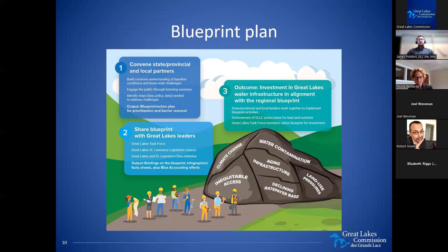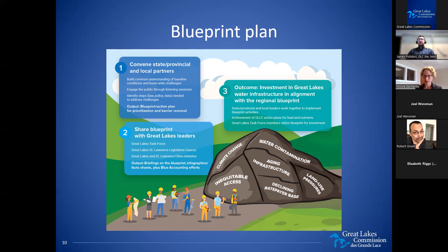The last bit for me is this graphic we had prepared to explain what we're trying to do with this project. For a while it seemed like it was infrastructure week every week in Washington D.C., and then finally things went very fast and we have this tremendous infusion of funding. What we're trying to do now is be at this point where we are still receiving input on our blueprint, and then want to make sure that once we have it, we're sharing it around the Great Lakes community and beyond so that we can all agree on the steps that need to be taken to advance infrastructure in the Great Lakes.